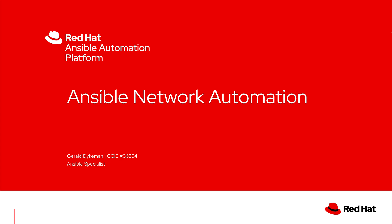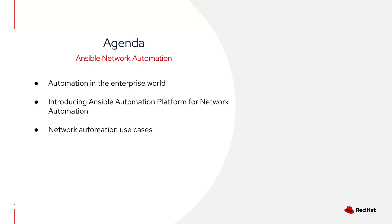Let's take a look at the agenda quickly. We're going to go over three main core topics: automation in the enterprise world and what that means; introducing Ansible Automation Platform specific to network automation and some things to consider there; and lastly, network automation use cases.